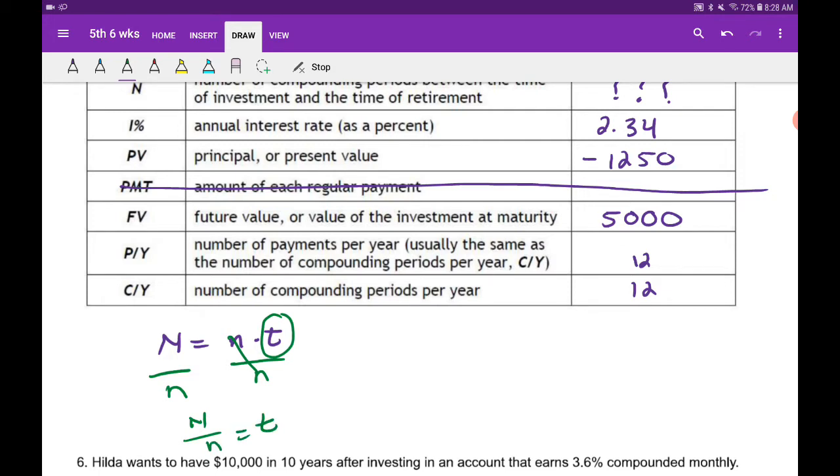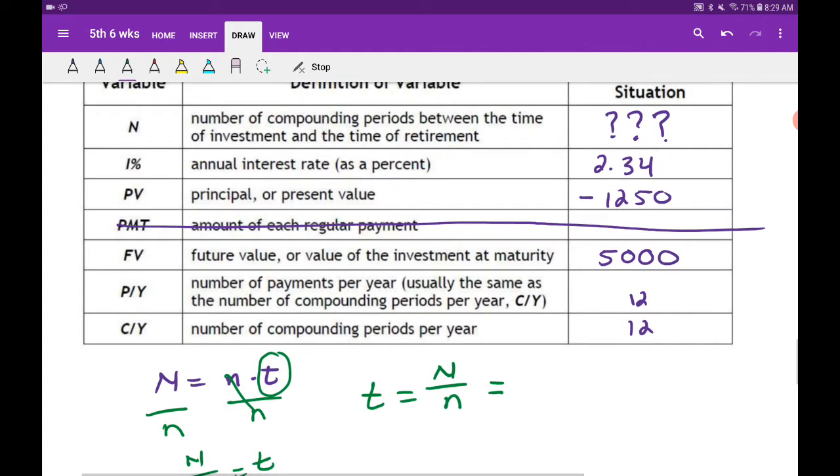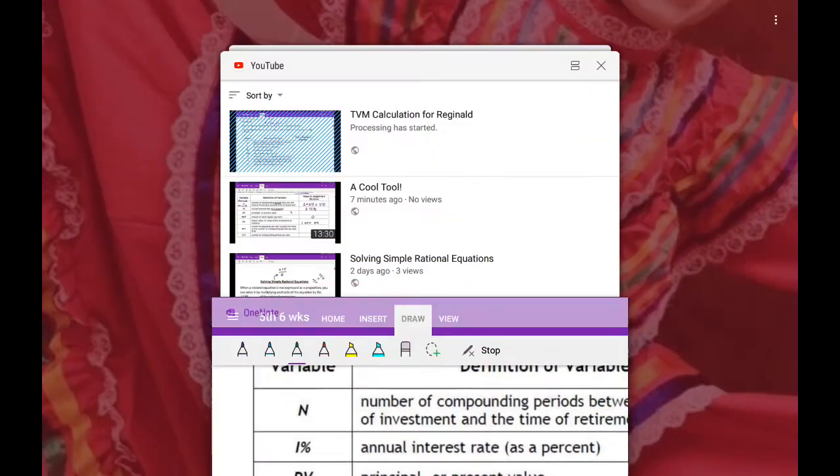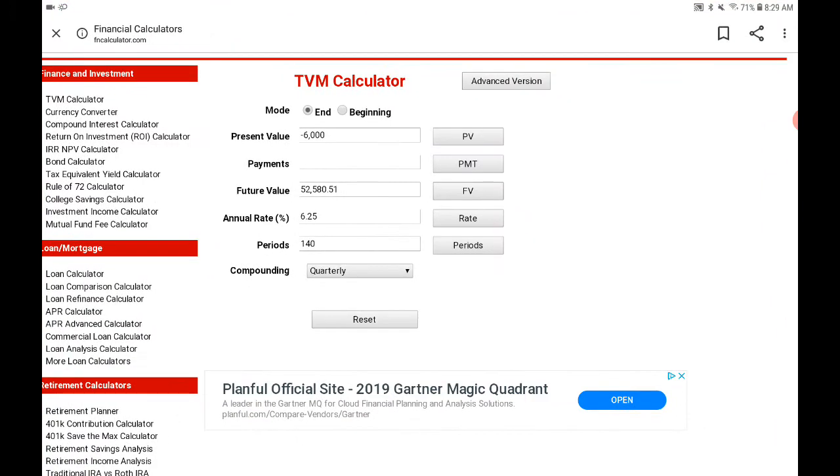So I'm just going to write it the other way: big N over n. What will that equal? First we need to find out what big N is. To do that, we'll go to our online calculator and reset that.